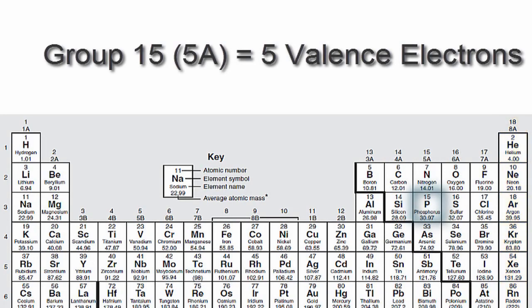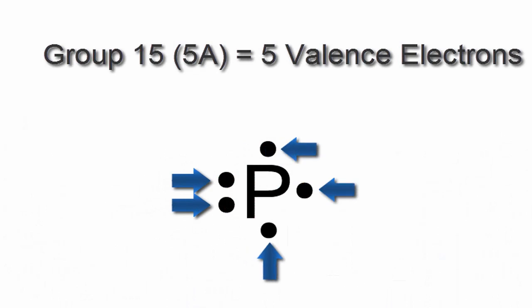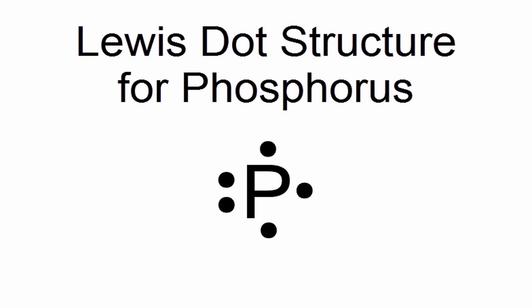Phosphorus is in group 15 or 5A, so it has five valence electrons. We'll take those five valence electrons for phosphorus and put them around the element symbol, P. So that's it, that's the Lewis dot structure for phosphorus.